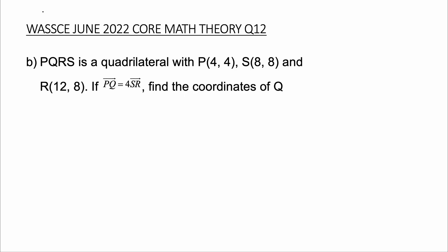So for 12b, PQRS is a quadrilateral with P(4, 4), S(8, 8), and R(12, 8). If the vector PQ is equal to 4·SR, find the coordinates of Q. Let's begin with our solution.